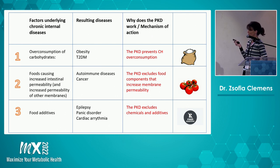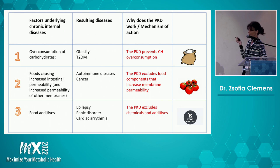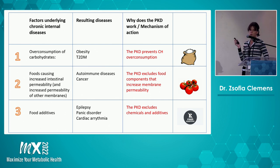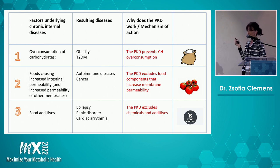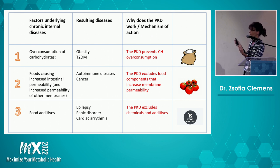The third factor is food additives, which may be the major factor behind epilepsy, panic disorder, and cardiac arrhythmia. The PKD excludes these items, so these conditions may be reversed by eliminating this third factor. This is of course not a fully one-to-one correspondence, because there may be factors resulting in more disease groups, or multiple factors behind one single disease like epilepsy. But this is a general scheme that connects a cause and the resulting disease.